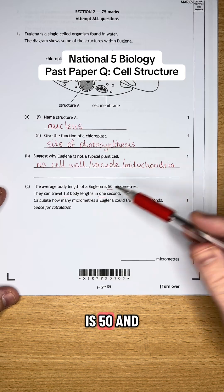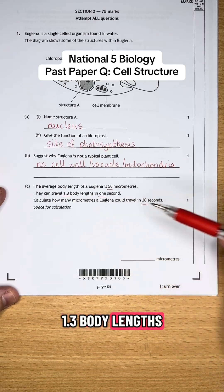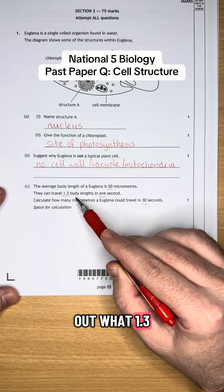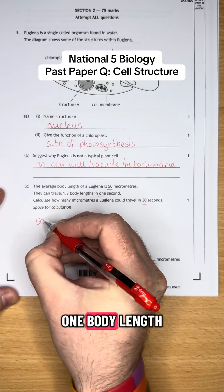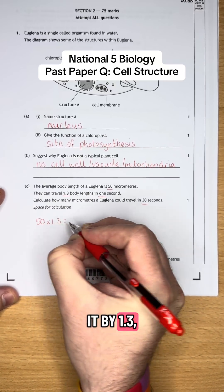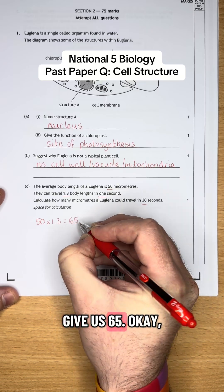The body length is 50, and it can travel 1.3 body lengths in a second. So let's find out what 1.3 body length is. We do that by getting the 50 for one body length and timesing it by 1.3. And that will give us 65.